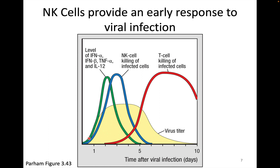We also saw that the timing of NK cell responses to viral infection — shown in blue on the graph — provides an early response, which is more indicative of an innate type of response. However, we discussed these cells as being from the lymphoid lineage, with functions similar to cytotoxic T lymphocytes. We felt the cells were confusingly on the border between the two types of responses, and if we really had to, we'd put them with innate cells, but it felt uncomfortable.